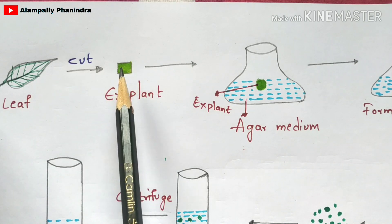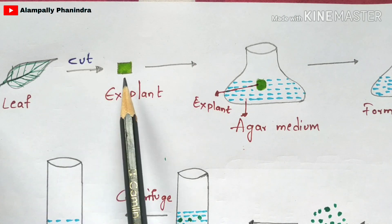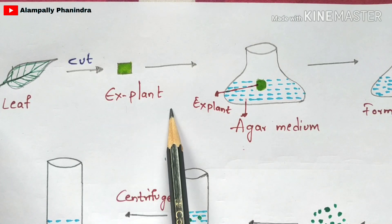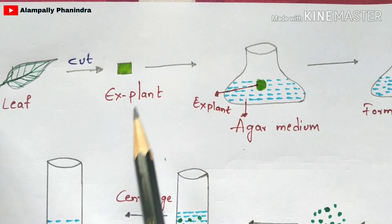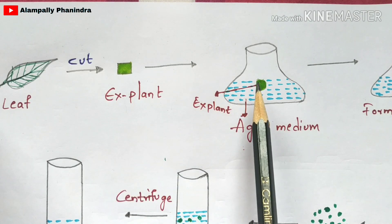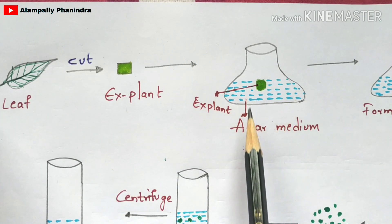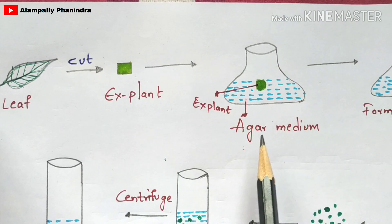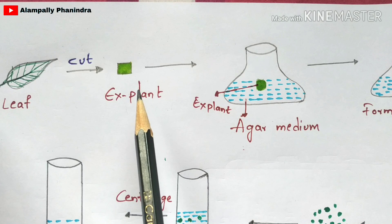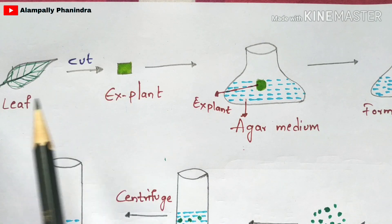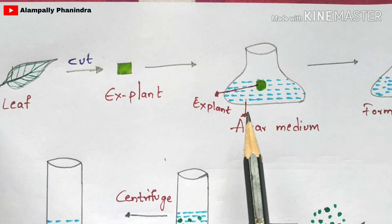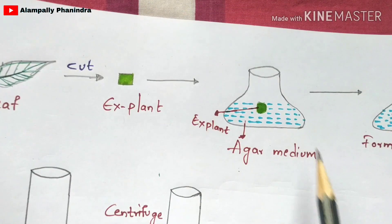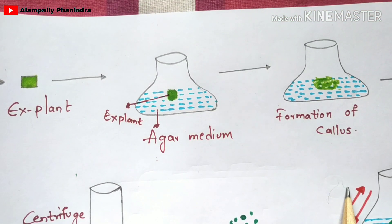That leaf will get cut into a small piece — a particular piece of the leaf will get extracted or isolated, and that extracted piece is called an explant. This explant will be taken and placed into a test tube which contains agar medium. The explant cut from the leaf should be placed into this agar medium present in the test tube.